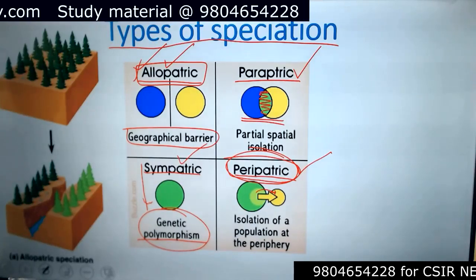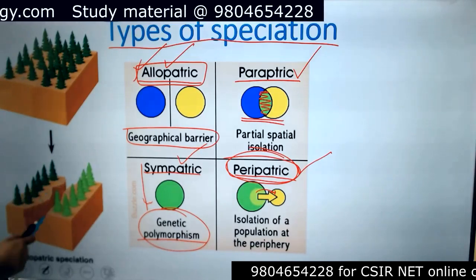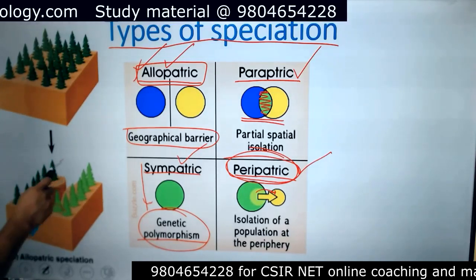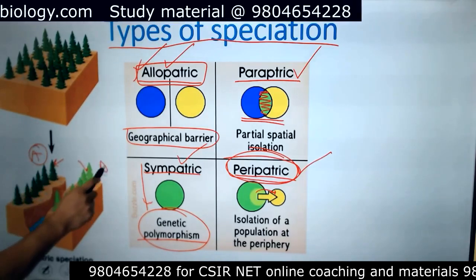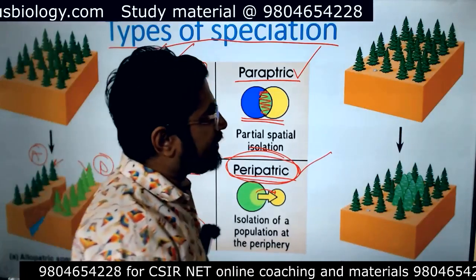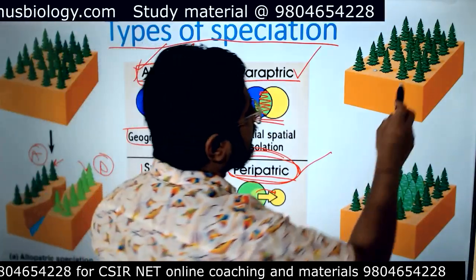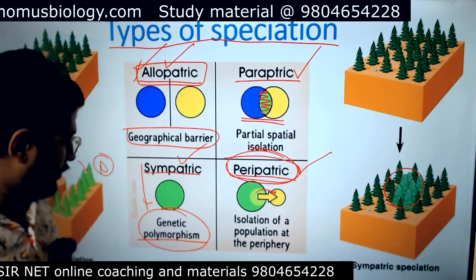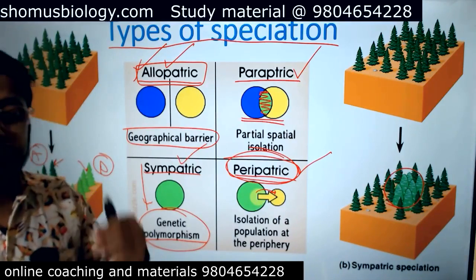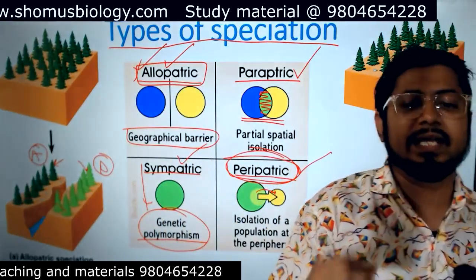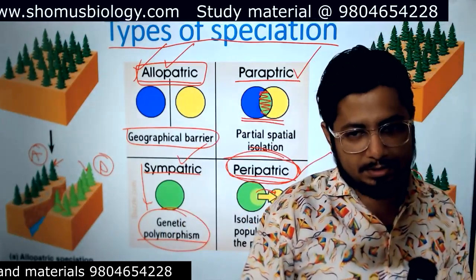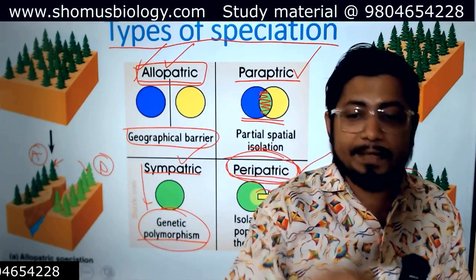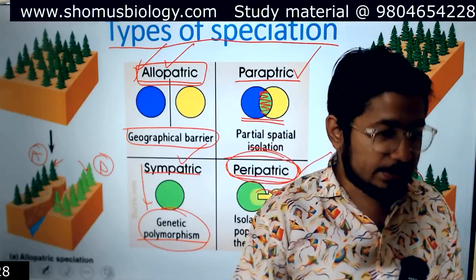Here is an example of allopatric speciation: trees living in an area with a river in between separating them. The two separate parts have two different environmental factors, so the trees change differently — one remains ancestral while the other becomes a new descendant. In sympatric speciation, there is no physical barrier, but modification of the organism occurs due to genetic polymorphism, forming new species in the same area. Evolution can be represented as changing gene frequency from generation to generation. If allele frequencies remain the same from one generation to the next, the population is not evolving. If allele frequency changes, then the population is evolving.